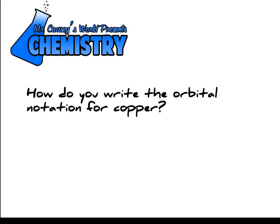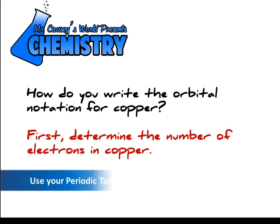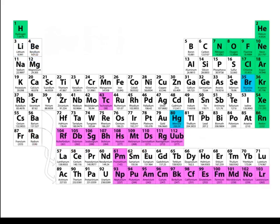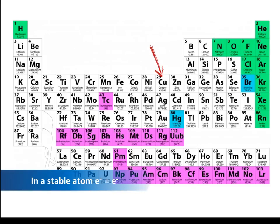How do you write the orbital notation for copper? Alright, well the first thing we want to do is determine the number of electrons in copper, so get out your periodic table and let's look. Copper has 29 electrons.